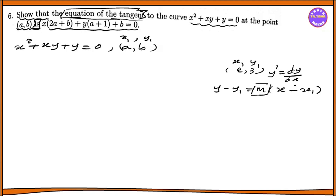f prime of x, dy by dx. And this is the slope of the tangent. And this is m, the linear slope.